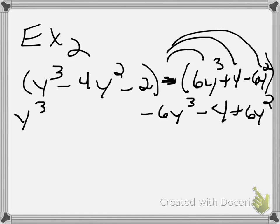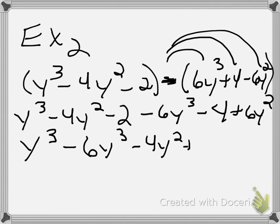You just bring down the first one and combine anything that has the same variable raised to the same power. Some of you would benefit by writing this vertically. Some of you would benefit by rewriting it. So you could do y³ - 6y³ - 4y² + 6y² - 2 - 4.